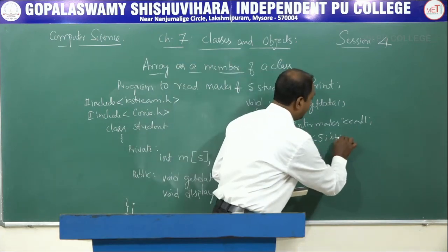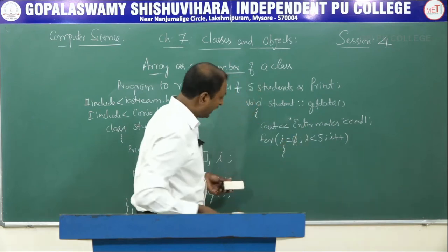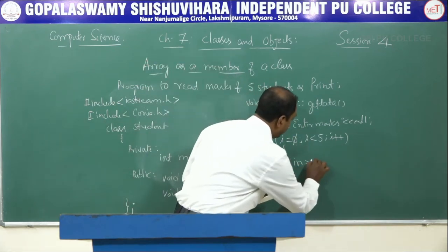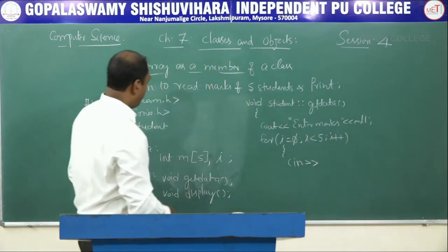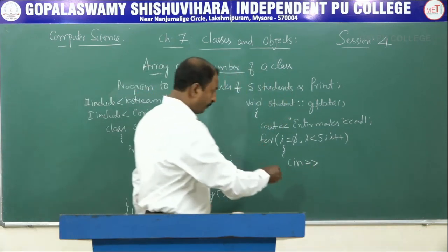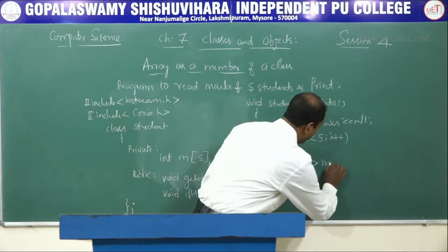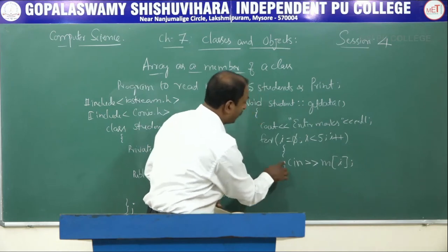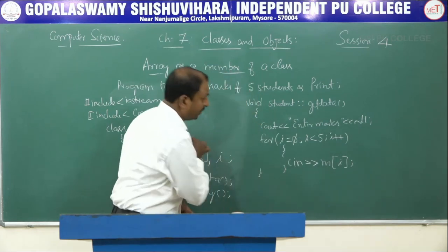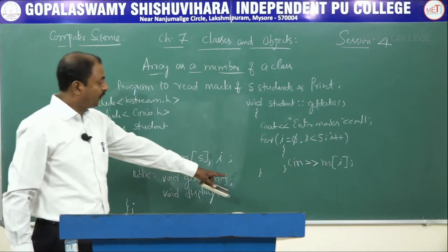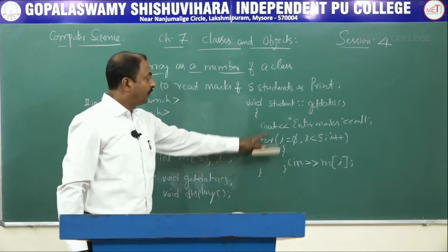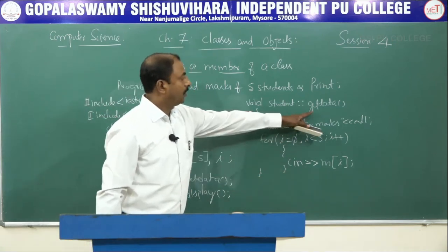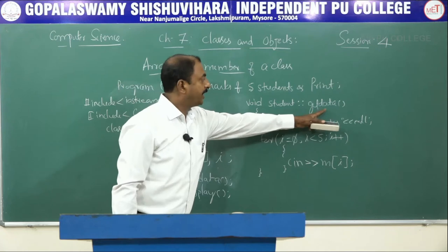Now we write the second function definition: void student::display. This is the function definition to display the marks. Inside, we output 'Marks of a student' with endl, then a for loop for(i=0; i<5; i++) with cout << m[i] to print each element with a space. This closes the for loop and the display function.